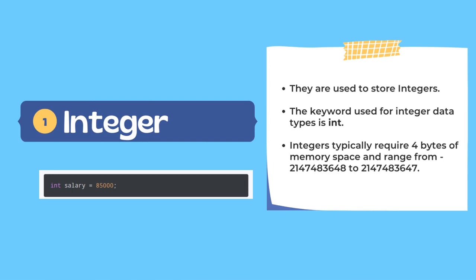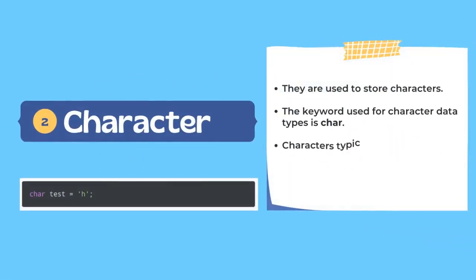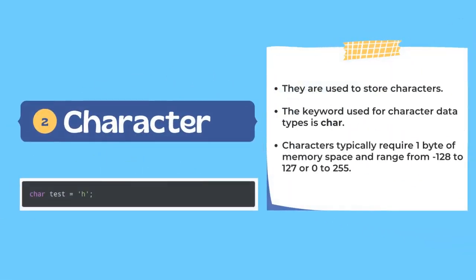The second primary data type is character. As the name suggests, it is used to store characters. The keyword used to define a character data type is char, and it takes one byte of memory space. In this example, I have defined char test = 'h', meaning the test variable is of char type and can only store a character value.